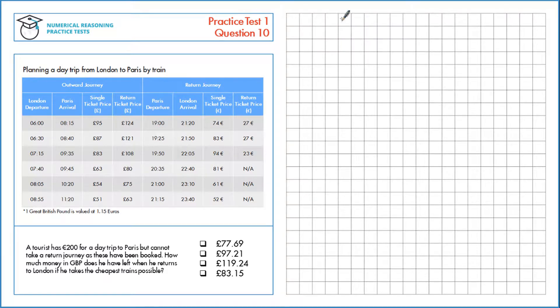A tourist has 200 euros for a day trip to Paris but cannot take a return journey as these have been booked. How much money in GBP does he have left when he returns to London if he takes the cheapest trains possible?